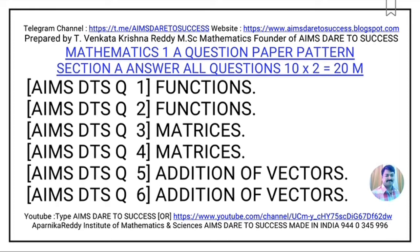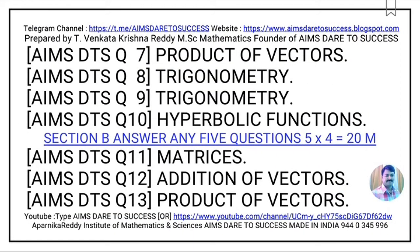Mathematics 1A Question Paper Pattern — I wanted to show you. Section A: all the questions are very short answer questions. Each question carries 2 marks. Here in Section A you write all 10 questions — there is no choice. 10 questions, so 10 times 2 equals 20 marks. Questions 1 and 2 are from Functions; 3 and 4 from Matrices; 5 and 6 from Addition of Vectors; 7 from Product of Vectors; 8 and 9 from Trigonometry; and question 10 from Hyperbolic Functions.